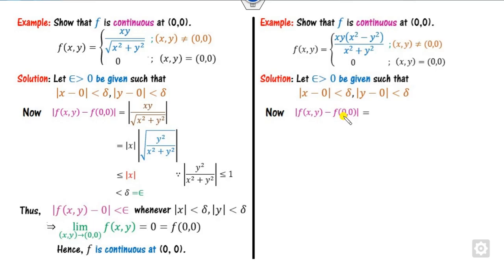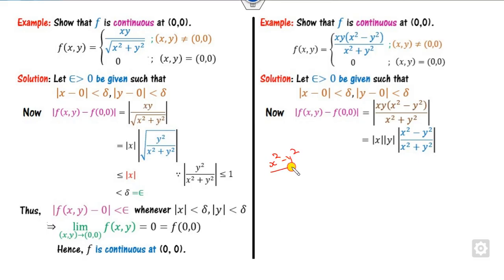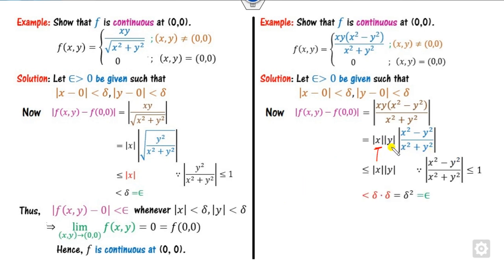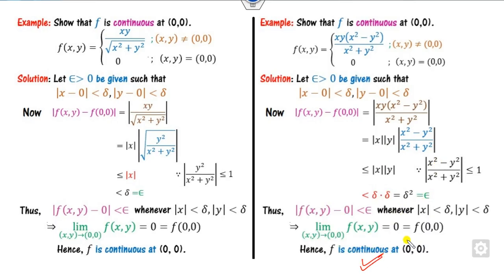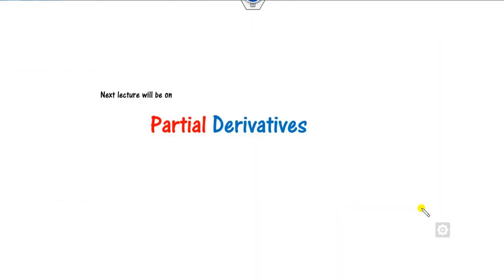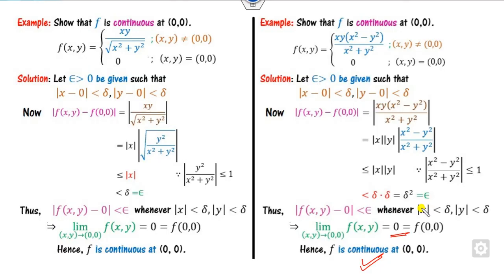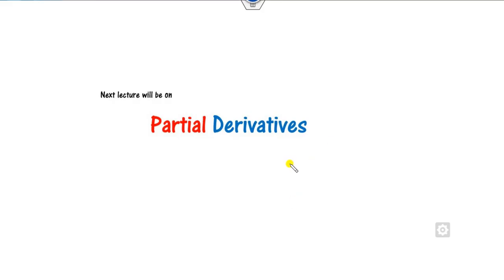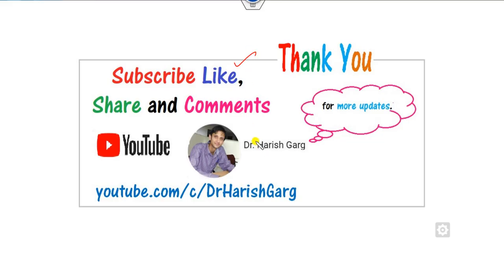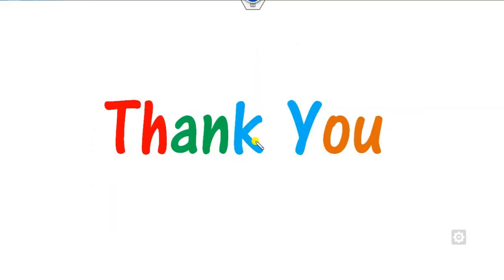For another example, starting with the definition and substituting, (x²−y²)/(x²+y²) is always less than or equal to 1. So the expression is bounded by |x| < δ = ε. Hence the function is continuous with value 0. This is how you solve continuity problems using Type 1 and Type 2. In the next class, we will see how to check derivatives of several variables. Like, share, and comment on these videos. Best of luck!